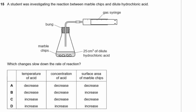Question 15. A student investigated the reaction between marble chips and dilute hydrochloric acid in a conical flask with a bung, collecting gas in a gas syringe. Which change slows down the rate of reaction? Decreasing the temperature of the acid slows the reaction because molecules move more slowly. Decreasing the concentration of the acid also slows it. Larger marble chips have less surface area and react more slowly. Since the question asks what slows the reaction, the answer is A — decreasing the temperature.